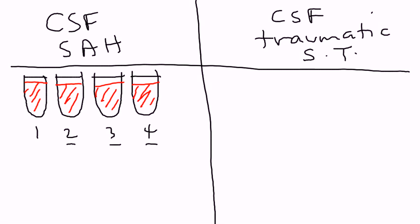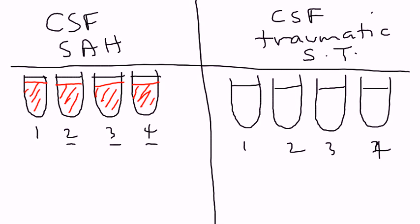Let's say this is the CSF sample. But something interesting happens with traumatic spinal taps, whereas if you took the samples, the amount of red blood cells in each successive sample would be less. See, this is in chronologic order. This was the first one that you drew. This was the second test tube. This was the third tube. This was the fourth.